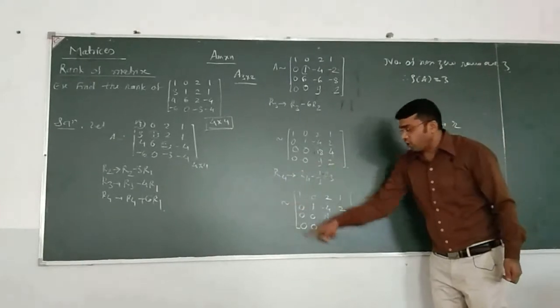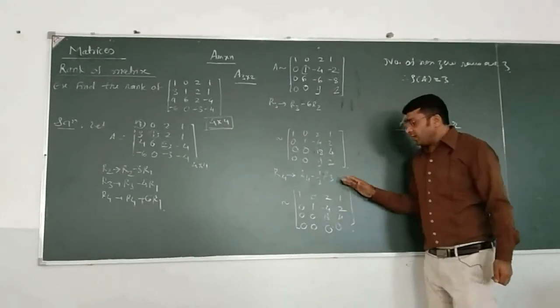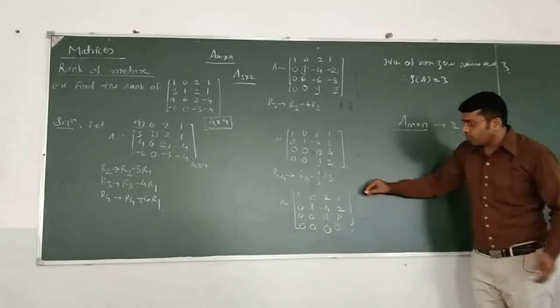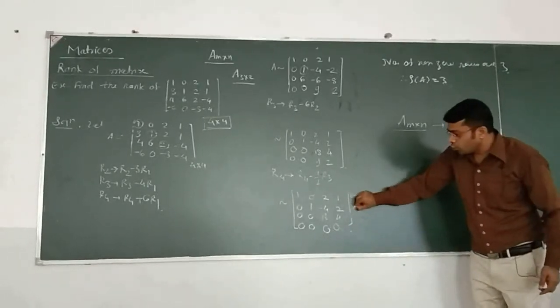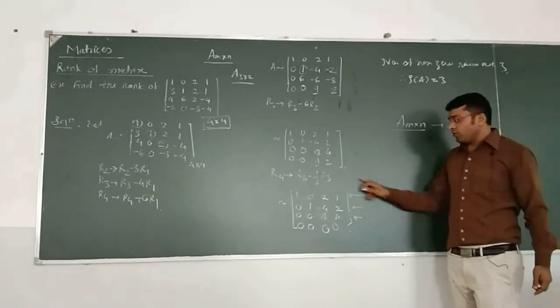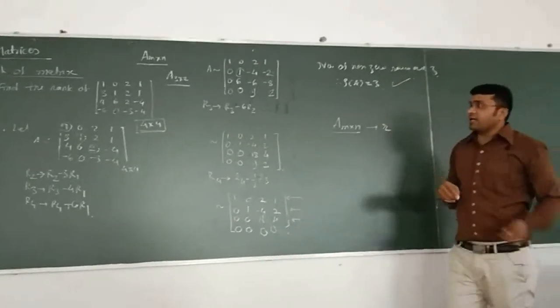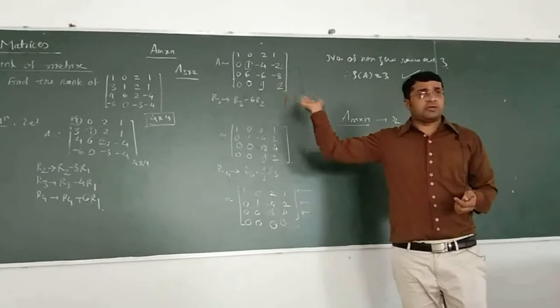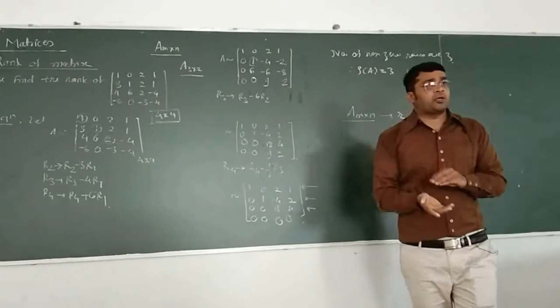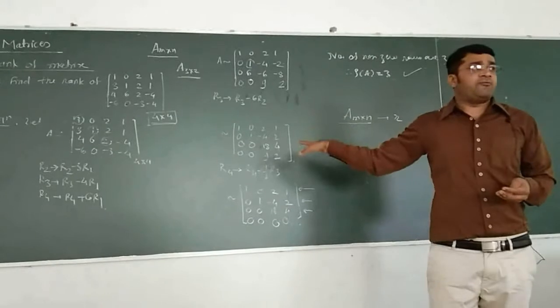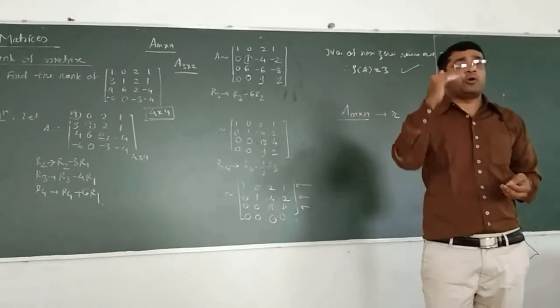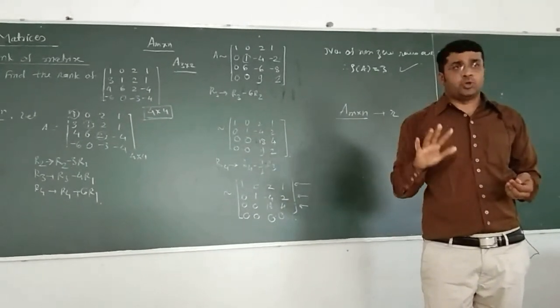Now, after getting this form, we just count out the number of non-zero rows. Number of non-zero rows is 1, 2, and this is 3. Therefore, the rank of matrix will be 3. This way, we decide the rank of given matrix. It is a 4 by 4 matrix. We may have a rectangular matrix or a square matrix. On the same line, we calculate the rank of matrix and count the number of non-zero rows.